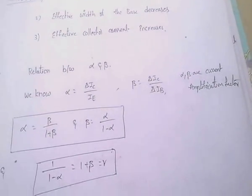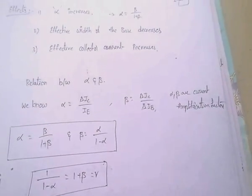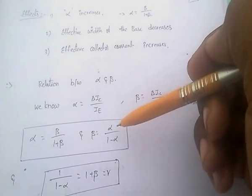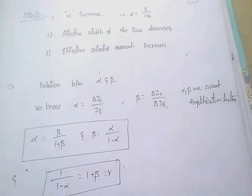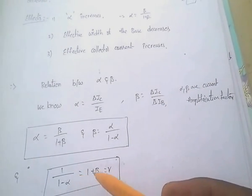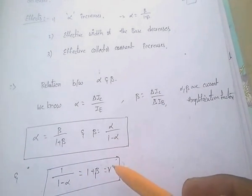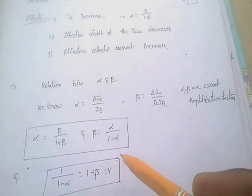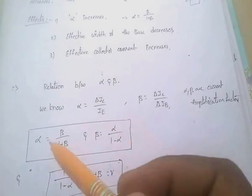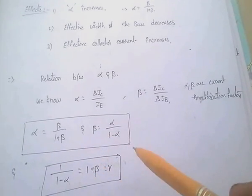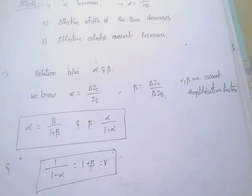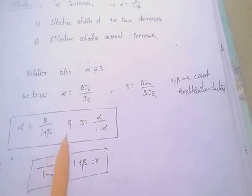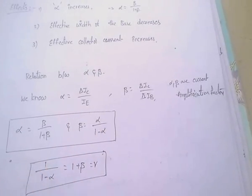Coming to the relation between alpha and beta: alpha equals beta divided by (1 plus beta); beta equals alpha divided by (1 minus alpha); and the relation between alpha, beta, and gamma is 1 divided by (1 minus alpha), which equals (1 plus beta), which equals gamma. These formulas are very useful for problems. Alpha and beta are current amplification factors.